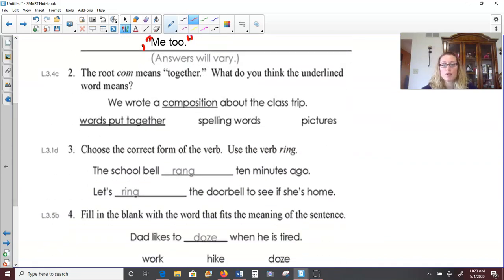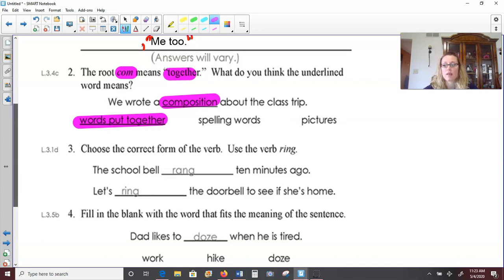Number two, the root, comm, means together. And so what do you think the underlined word means? Well, we wrote a composition about the class trip. Well, wrote, you know, writing is involved. So this could be spelling words. Pictures, usually you're drawing or sketching, not writing pictures. But a composition actually means to put words together. So if you're writing a composition about the class trip, you're writing like a story. You're putting words together to tell about it.